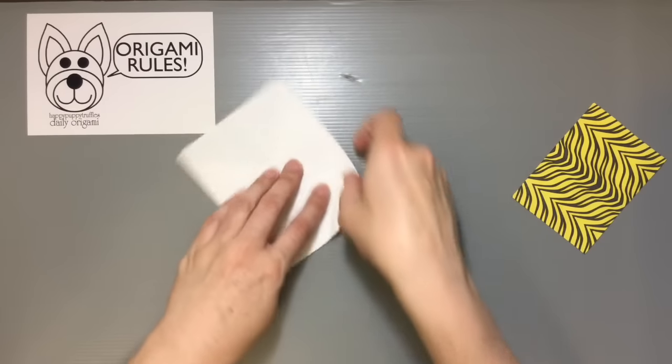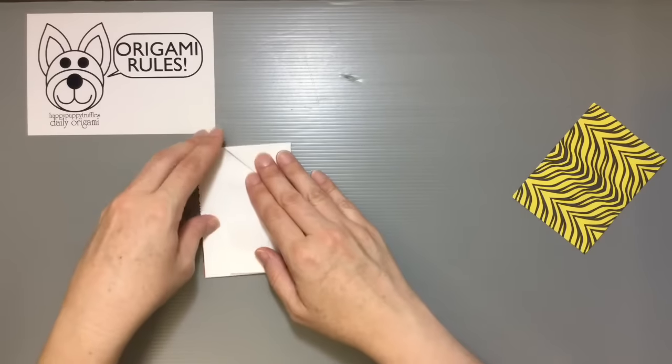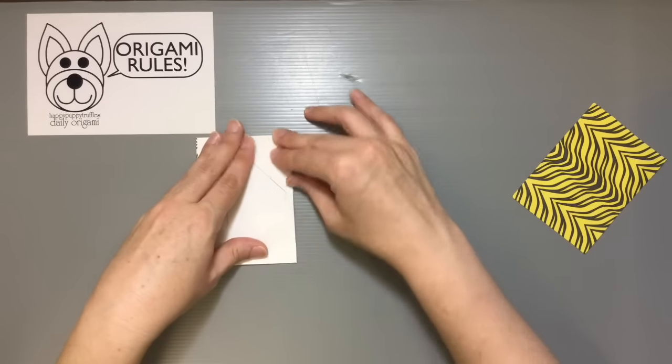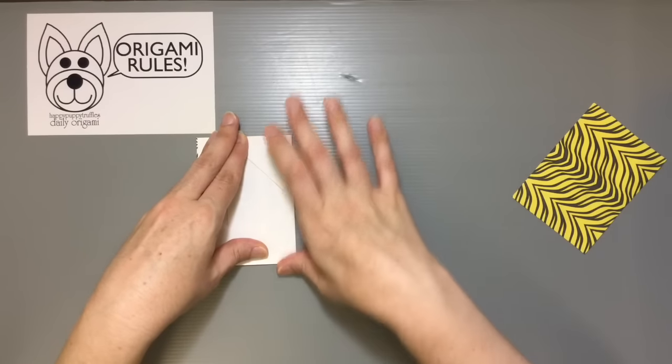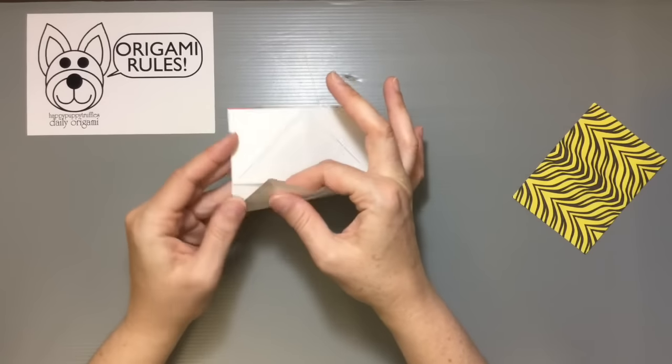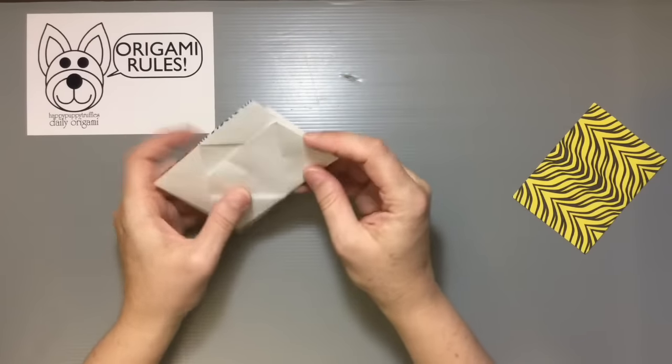Turn it around and do the same thing here, and this is just one way to kind of keep it all straight so you wind up with something like this. Then we're just going to take one of these and tuck it into the sides.